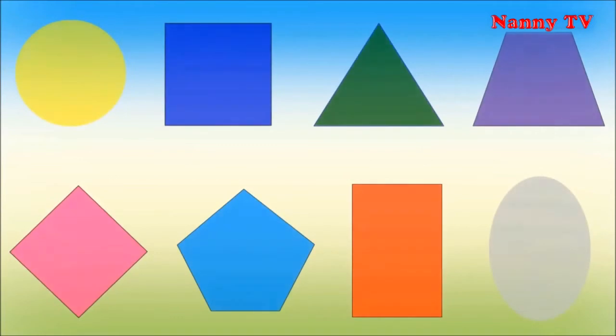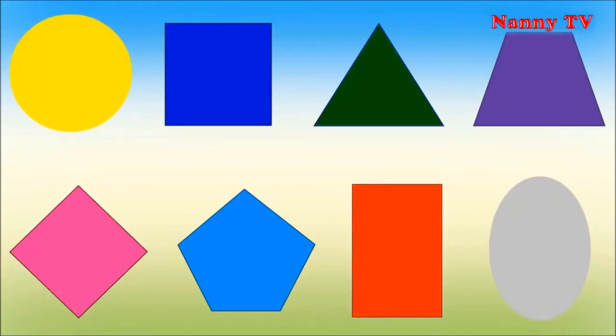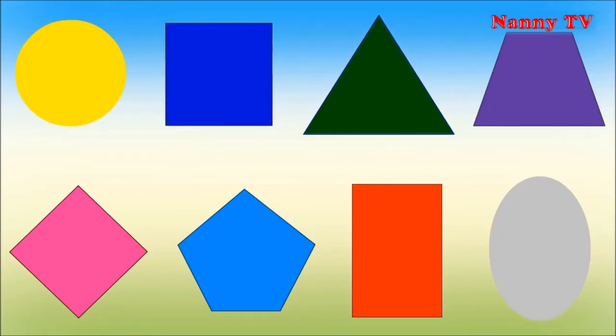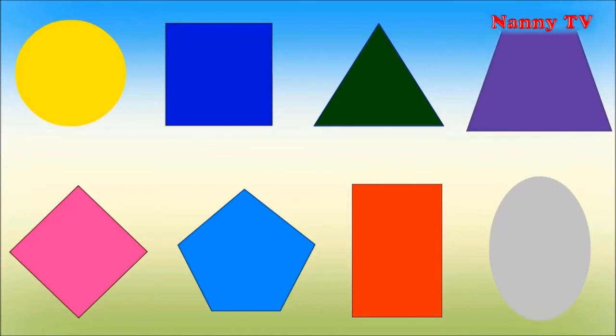And here are our new friends. A circle, a yellow circle. A square, a blue square. A triangle, a green triangle. A trapezoid, a violet trapezoid.